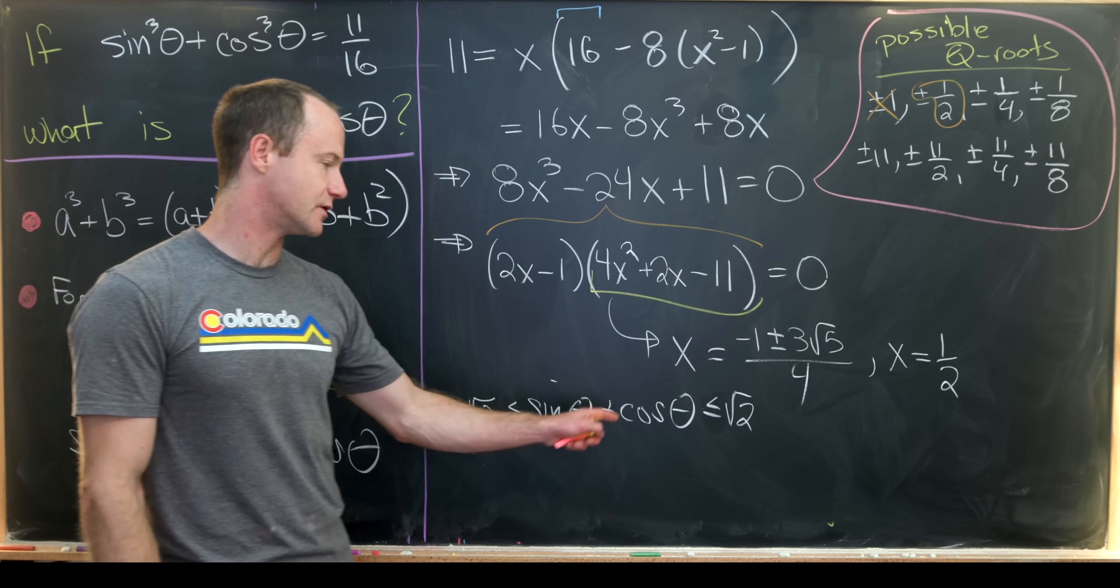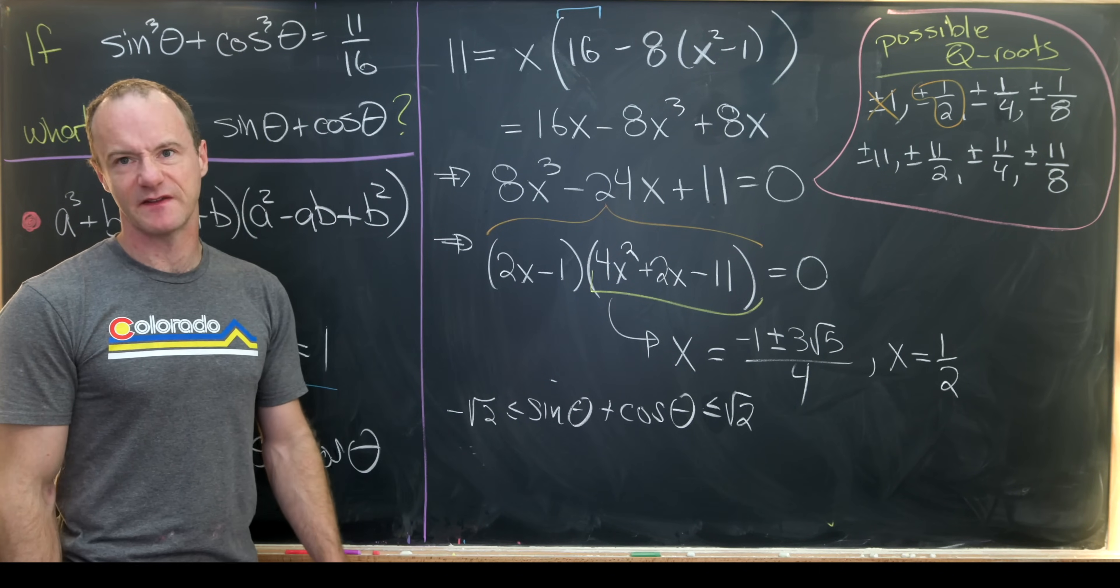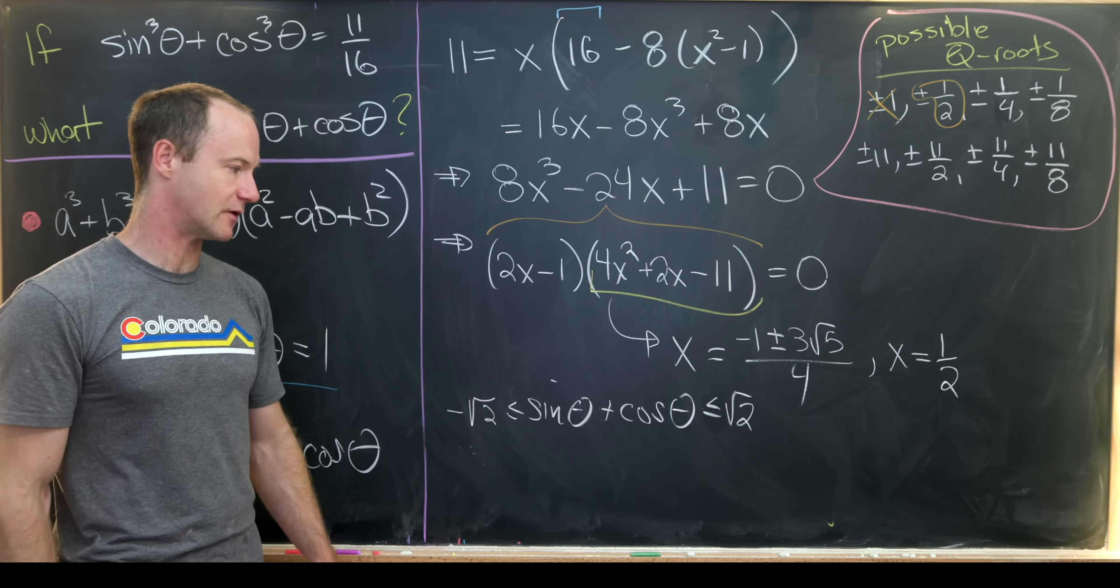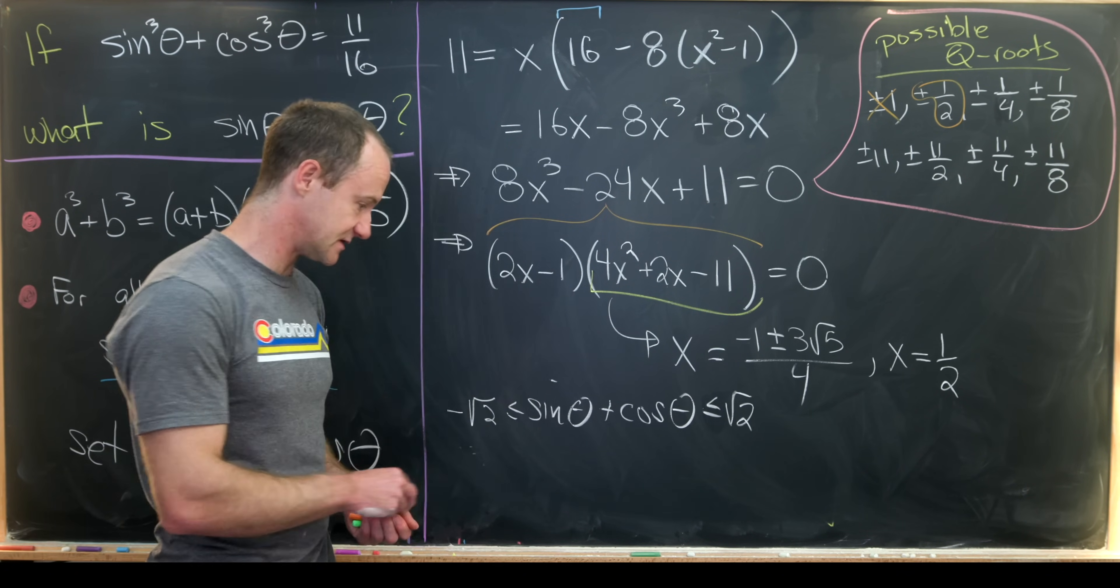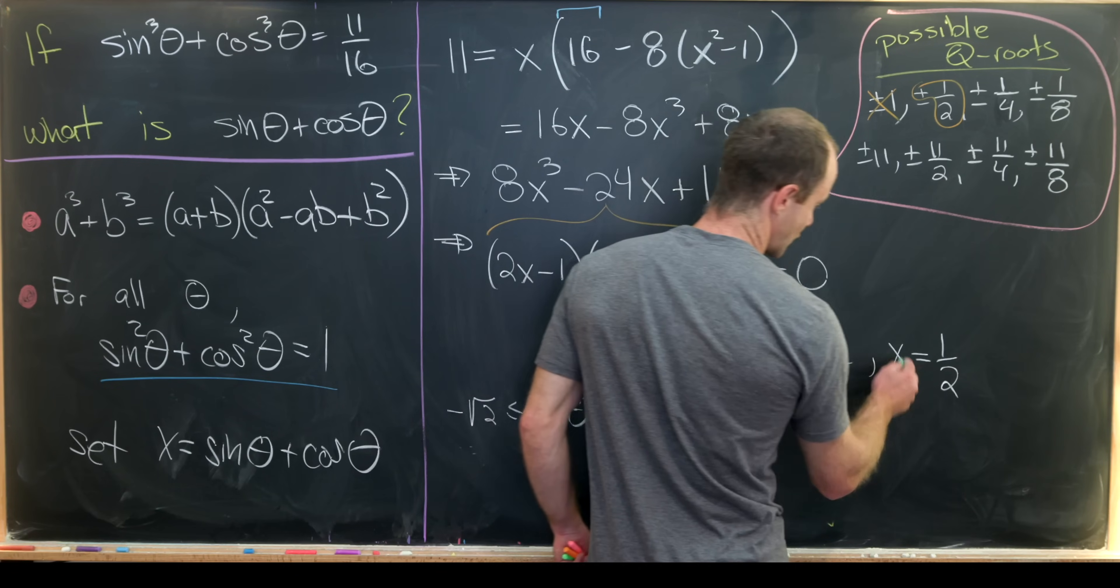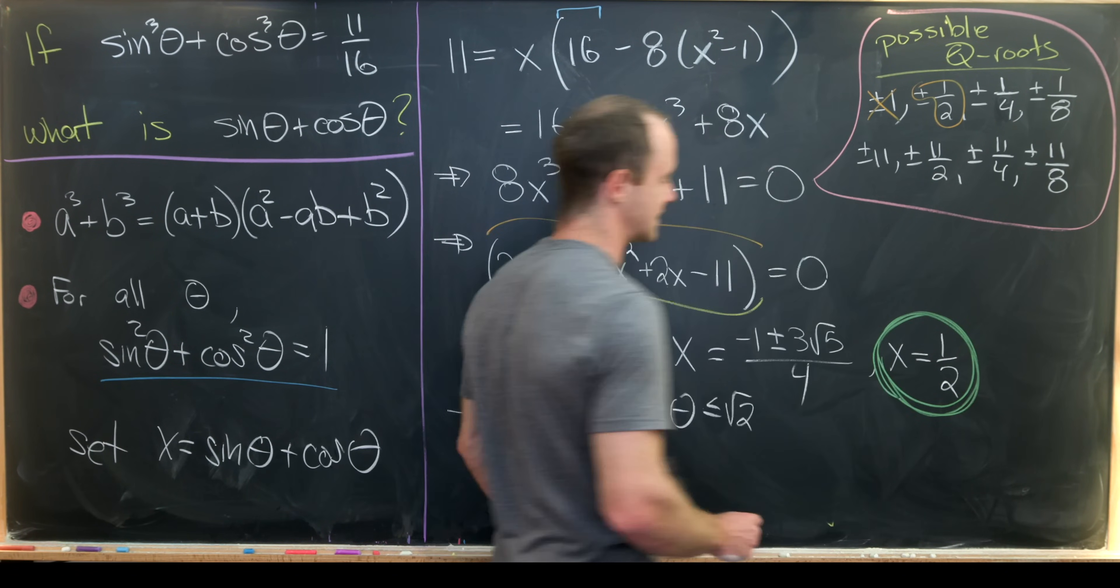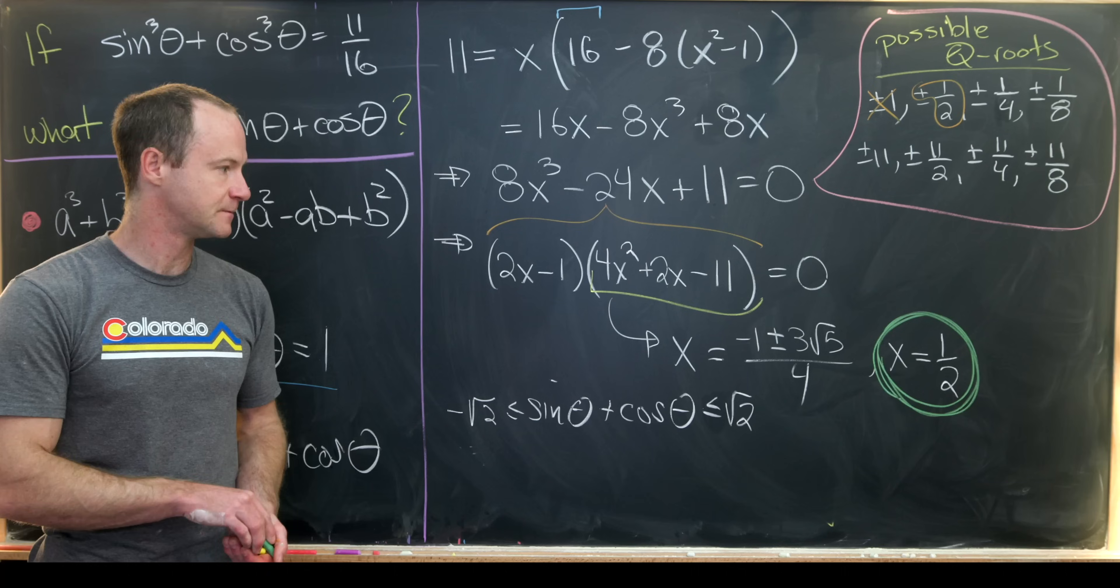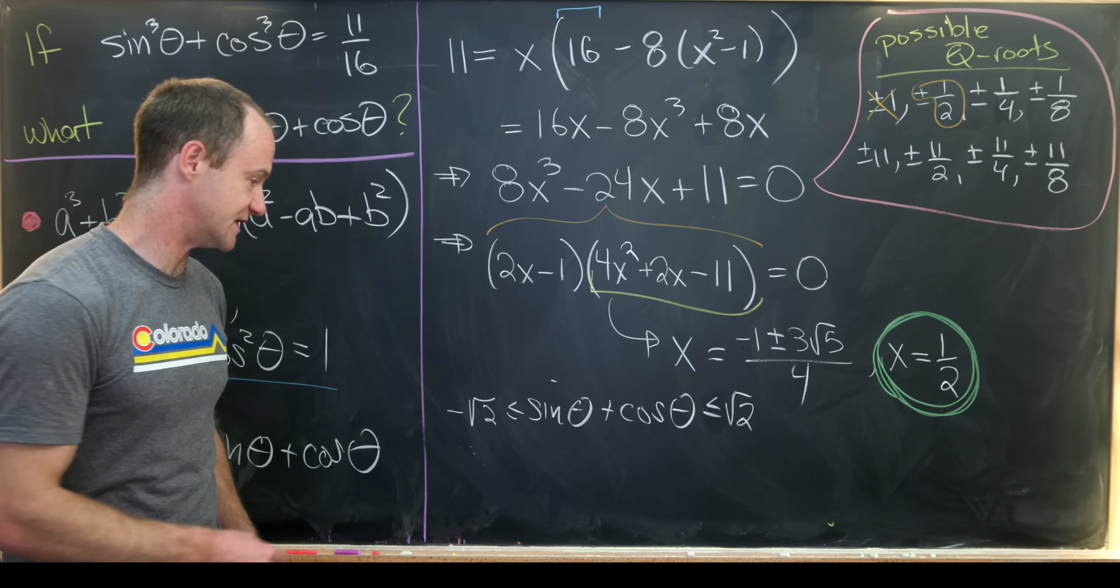And you can maybe do some simple calculus to find the maximum and minimum value for sine theta plus cosine theta to see this bound here. So one half is most definitely between the square root of 2 and negative the square root of 2. So one half is most definitely one of our solutions.